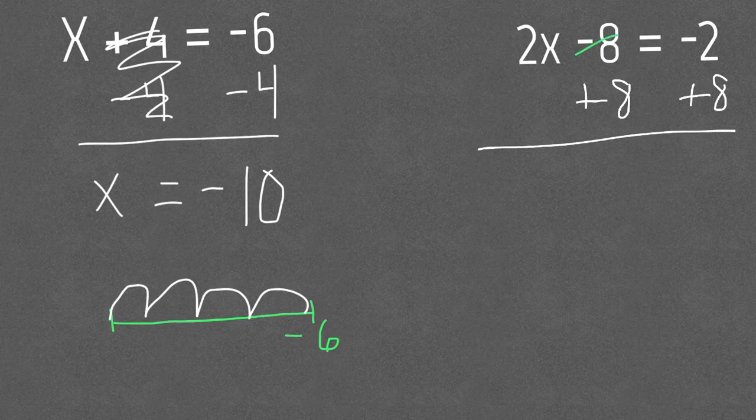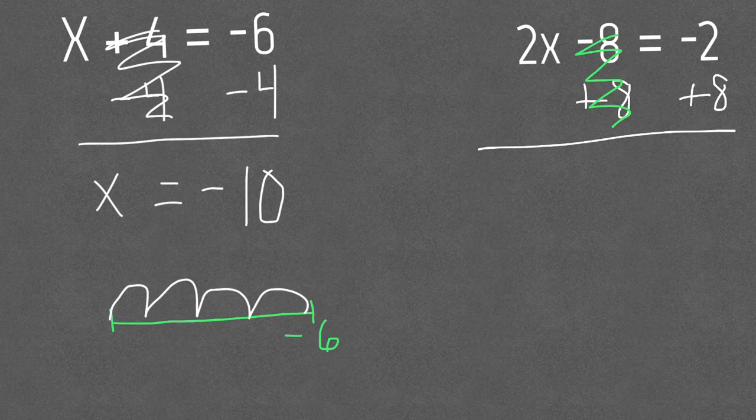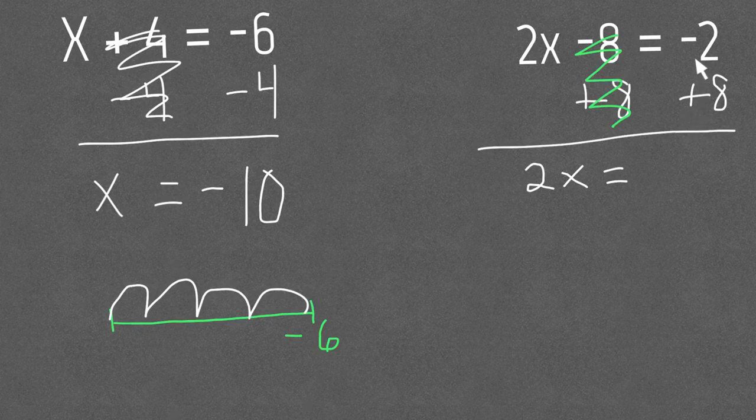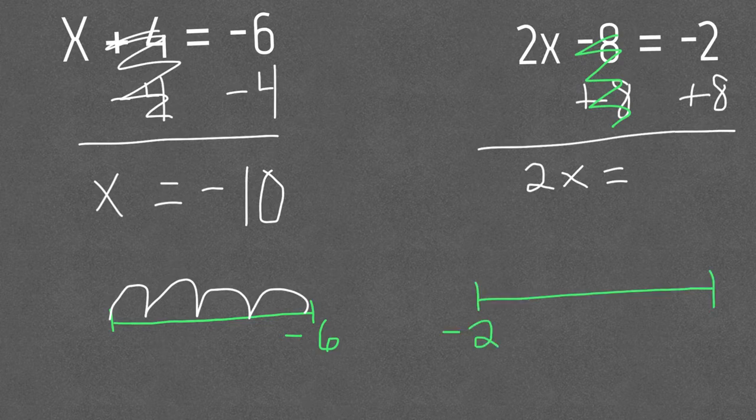Okay I know this will cancel out. On the left side I'll be left with 2x equals and now this is the part I have to solve negative 2 plus 8.